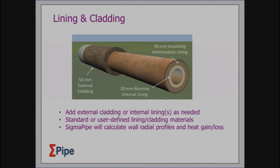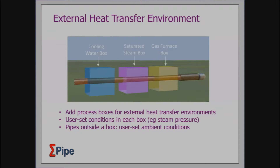You can put lining and cladding on pipes, and it will calculate the thermal gradients radially across the pipe out to the environment. Sometimes it's not the natural environment the pipe is interacting with — sometimes it's part of a process. You can define external environments: flue gas or hot gases, condensing or vaporizing steam, or cooling water. I'll demonstrate the use of that in a little bit.